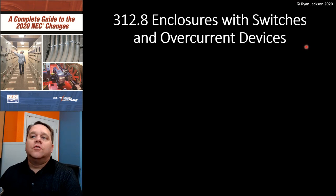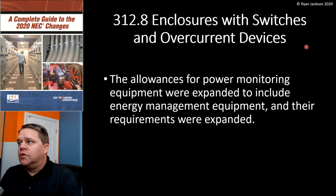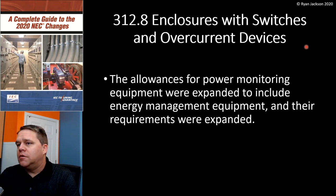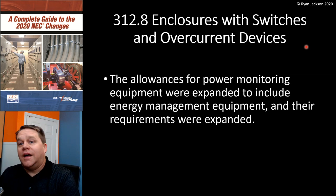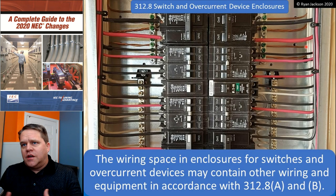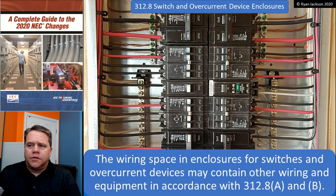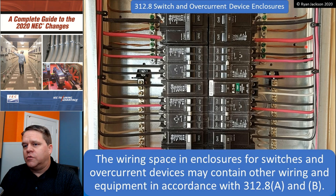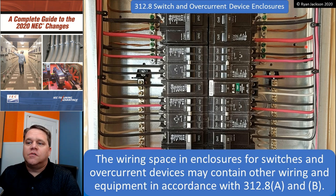Alright, 312.8: Enclosures with Switches and Overcurrent Devices. Small change here — the allowances for power monitoring equipment were expanded to include energy management equipment, and their requirements were expanded as well. We're covering more than just the change because 312.8 is a pretty small section, so let's look at the whole thing. It starts out by saying that the wiring space in enclosures for switches and overcurrent devices may contain other wiring and equipment in accordance with 312.8(A) and (B).